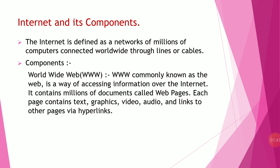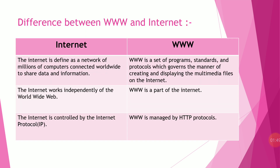Next, we will discuss about the difference between World Wide Web and Internet. The first difference is: the Internet is defined as a network of millions of computers connected worldwide to share data and information. Whereas, World Wide Web is a set of programs, standards and protocols which governs the manner of creating and displaying multimedia files on the Internet.